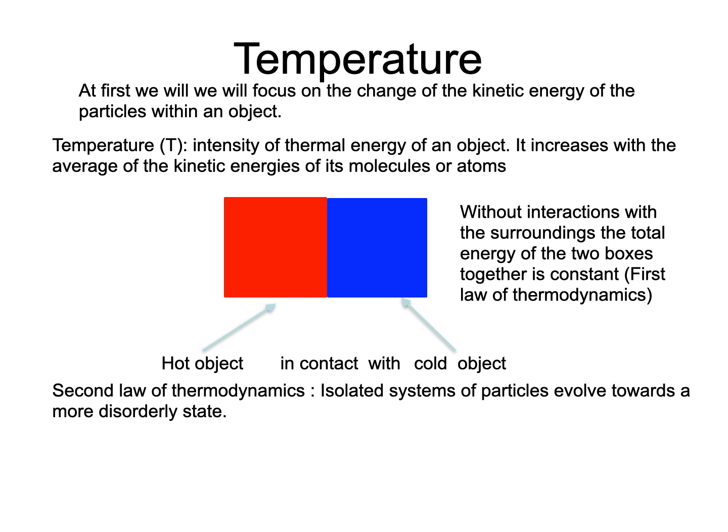The temperature of the hot object drops as the average kinetic energy of its particles decreases while the temperature of the cold side increases because its particles are getting the kinetic energy that the hot side is losing. The process continues until both objects reach the same equilibrium temperature, the value in between the two initial temperatures.